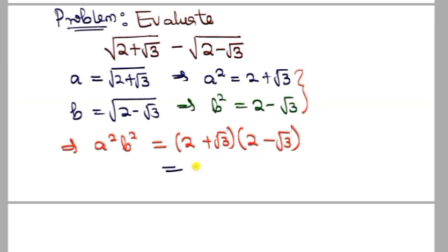We have 2² - (√3)² = 4 - 3 = 1. Therefore, a²b² = 1, which means ab = 1.